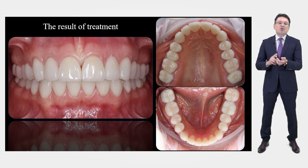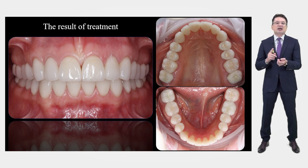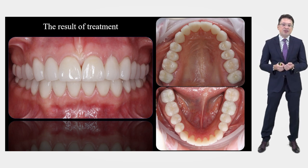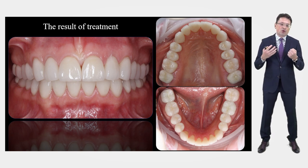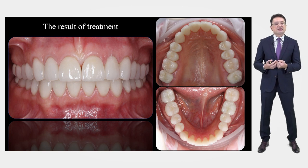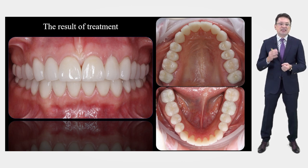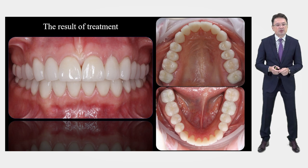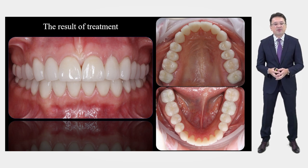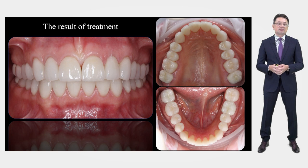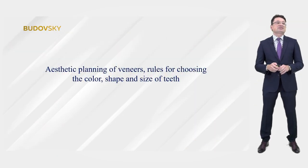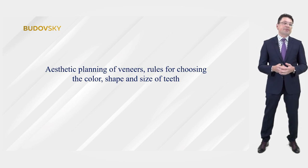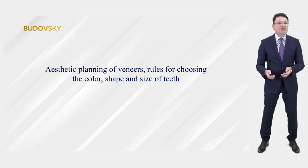How to increase the bite? What is the reaction of the muscles? How to change the profile and improve not only the appearance of the patient but also optimize occlusion, the work of the TMJ, and much more — I have a separate course on total prosthetics where we discuss many nuances and lifehacks of these complex works. Aesthetic planning of veneers covers rules for choosing the color, shape, and size of teeth.